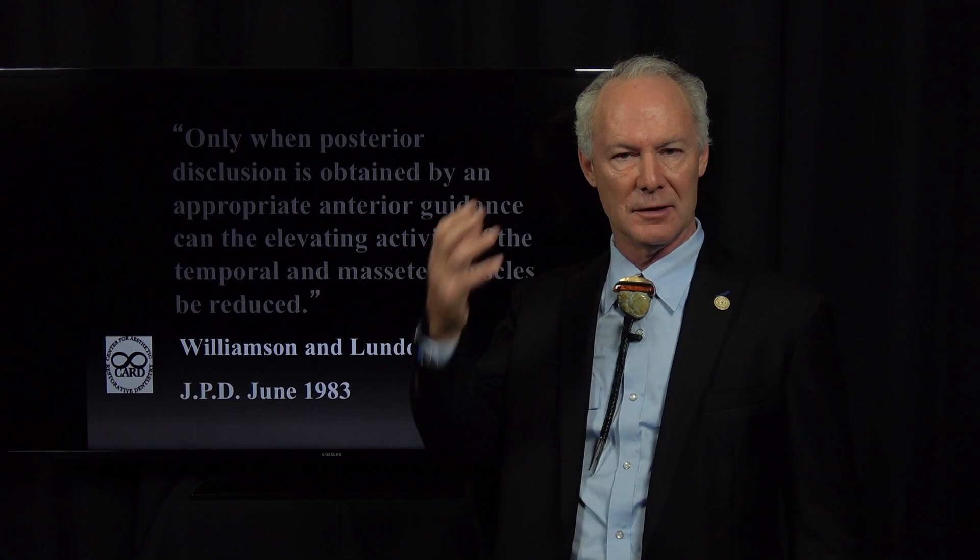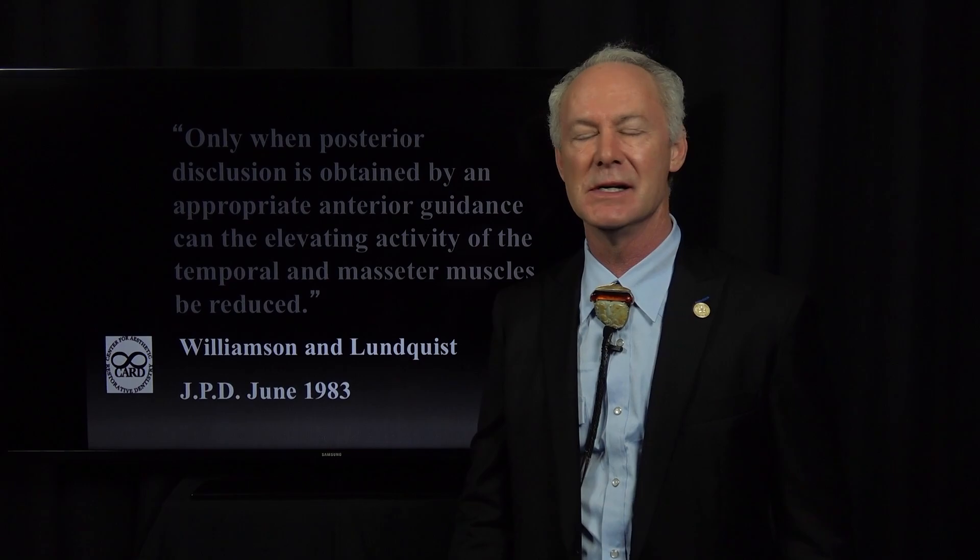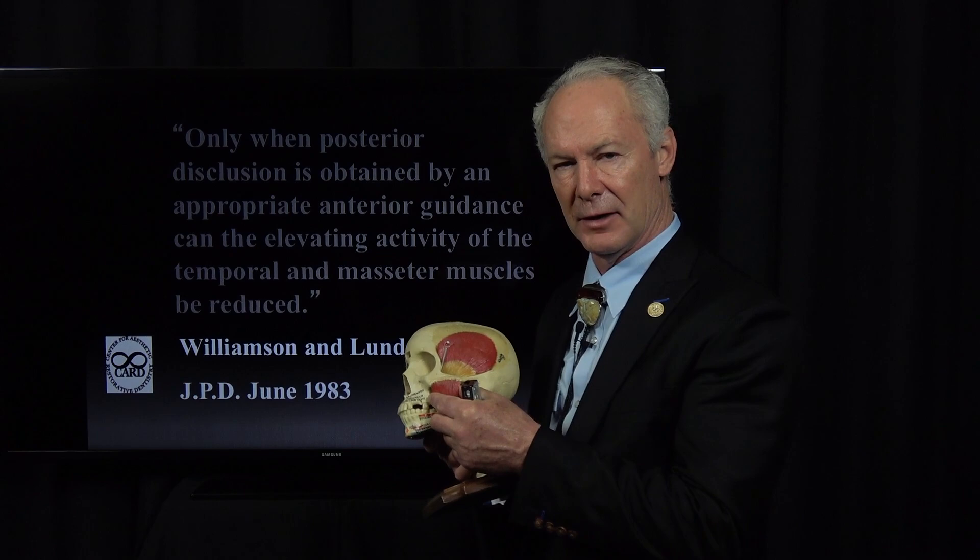So anterior guidance is the most anterior tooth contacting in any movement of the mandible. Ideally, anterior guidance is on the anterior teeth, cuspid to cuspid. The reason for that is because of the Williamson and Lundquist study. You look at these muscles — masseter, temporalis, medial pterygoid.